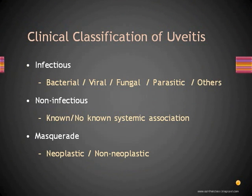For the causes of uveitis including pan uveitis, we have a clinical classification. It can be infectious, non-infectious, or masquerade syndromes. Infectious causes could be bacterial, viral, fungal, parasitic, or any other. Non-infectious causes could have known systemic associations or could be only affecting the eye. Masquerade syndromes appear like uveitis but are not, and could be neoplastic or non-neoplastic.